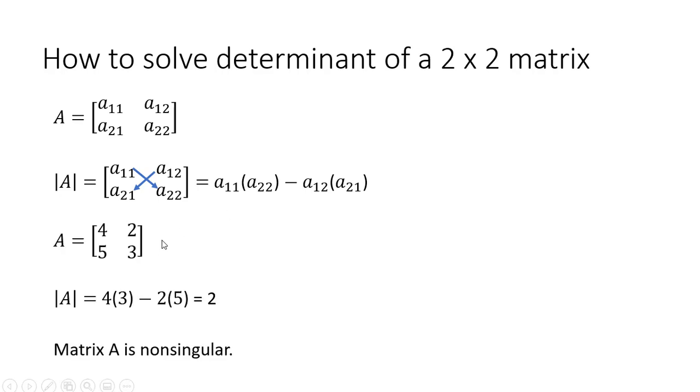Let's do a numerical example. We're going to have 4 times 3 minus 2 times 5. We have a determinant here of 2. And because it's non-zero, we have a non-singular matrix.